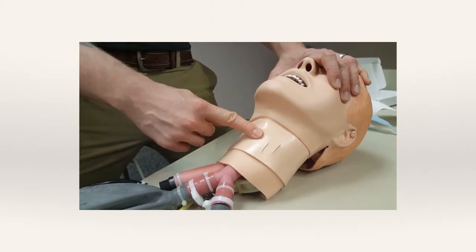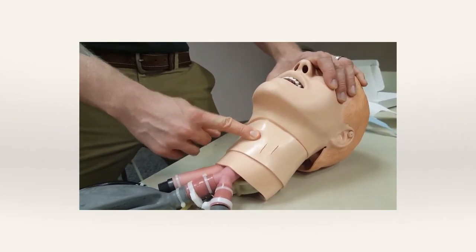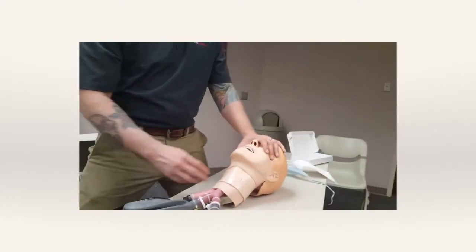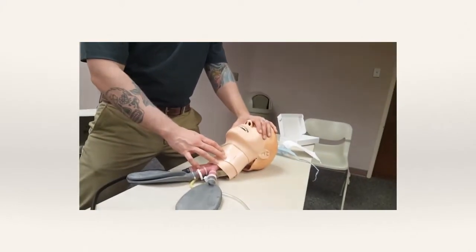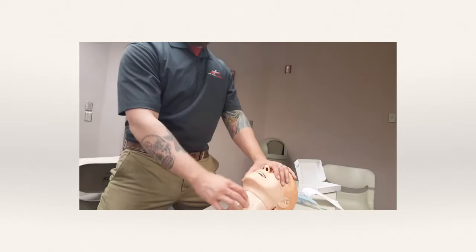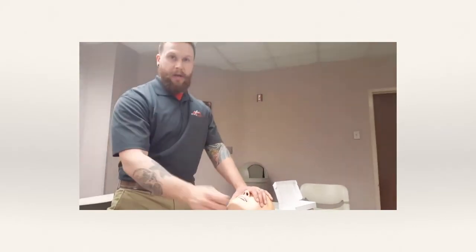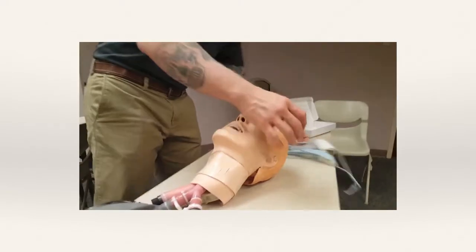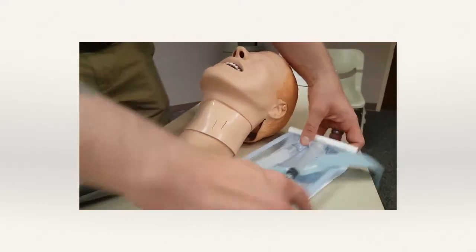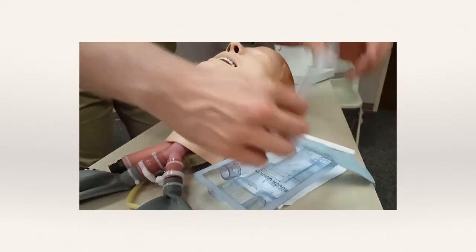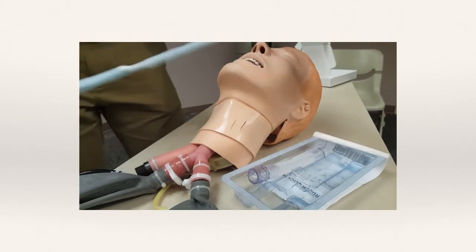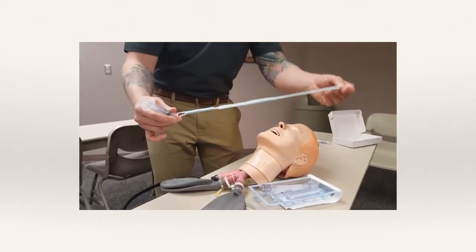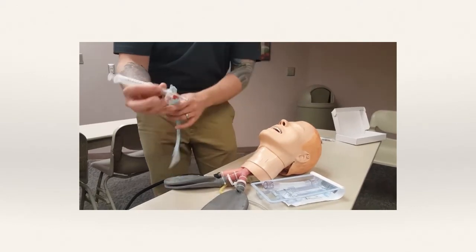Palpate the cricoid membrane and make sure that's where you want to go, because you're about to stick this person in their neck. Swab the area with iodine if you have it, or alcohol swabs in an emergent situation. We're going to take the bevel and insert the needle at a 90-degree angle straight into the cricoid membrane. Hold the syringe right at the needle — if you hold down low on the catheter it will just slide off. Use good firm pressure, but don't stab it like you're chipping ice because it could go all the way through to the other side.